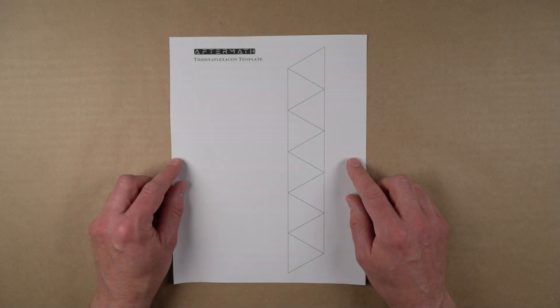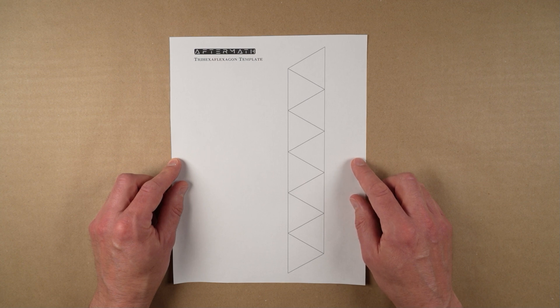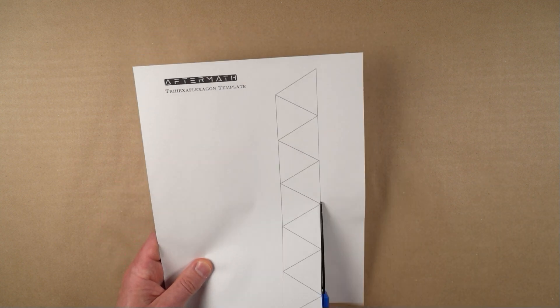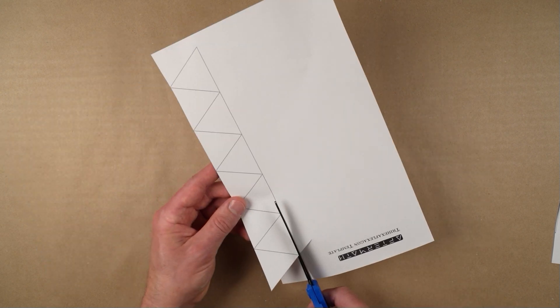To begin, download the trihexaflexagon template using the link in the description. Print the template on regular letter-sized paper and carefully cut out the strip containing 10 triangles.